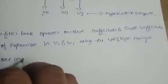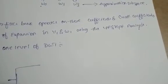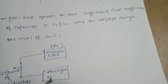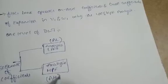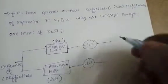For one level of DWT, the input is a sequence of coefficients from V1 or V0. We apply analysis LPF (low-pass filter) and analysis HPF (high-pass filter), followed by down-sampling.